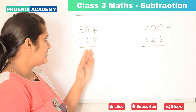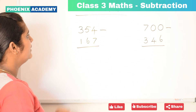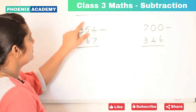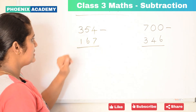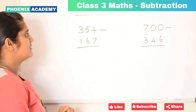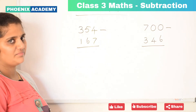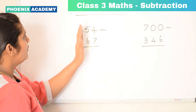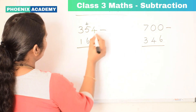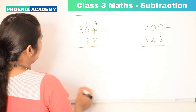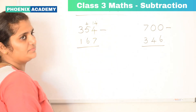Let's subtract 3-digit numbers with regrouping: 354 minus 167. 354 is 4 ones, 5 tens, and 3 hundreds. 167 is 7 ones, 6 tens, and 1 hundred. Let's subtract ones first: 4 minus 7. Since 7 is a bigger number, we cannot subtract 7 from 4, so we need to borrow 1 from the tens place. So this 5 becomes 4, and 4 becomes 14 ones. We can subtract 7 from 14: 14 minus 7 is 7.